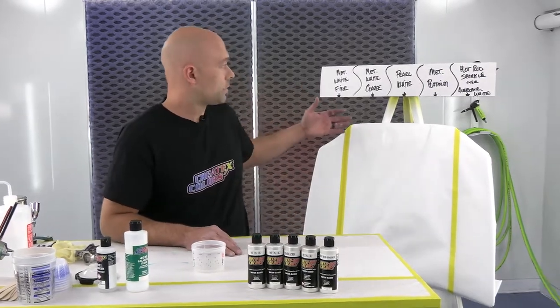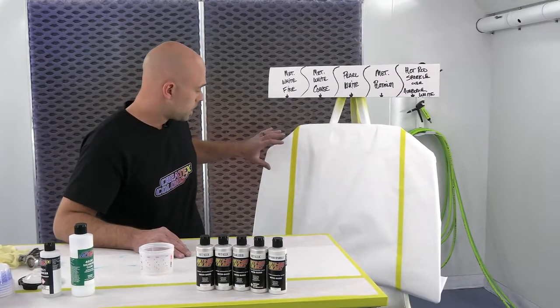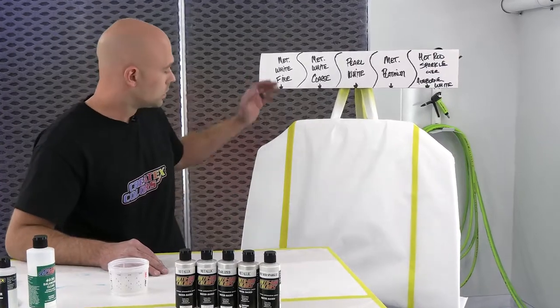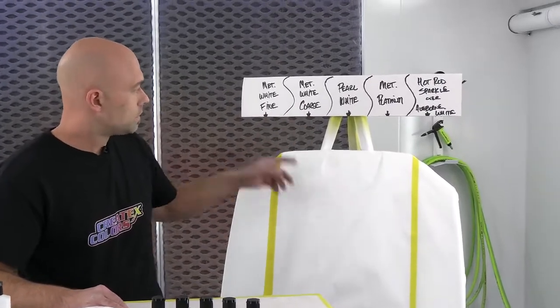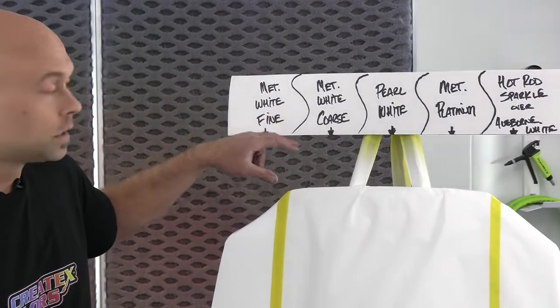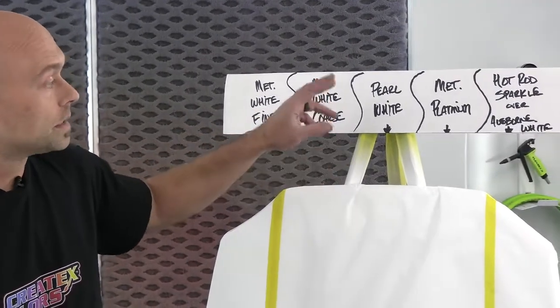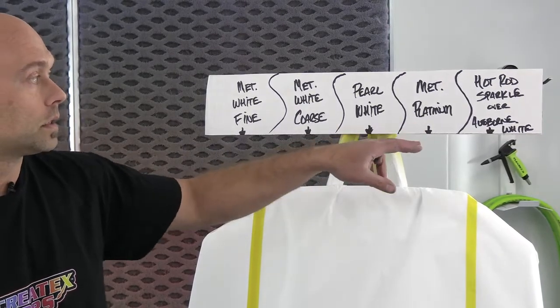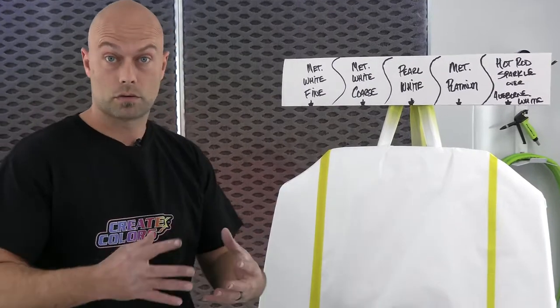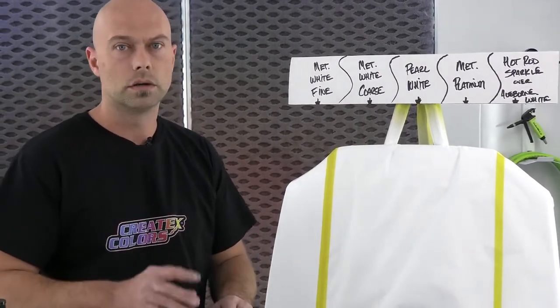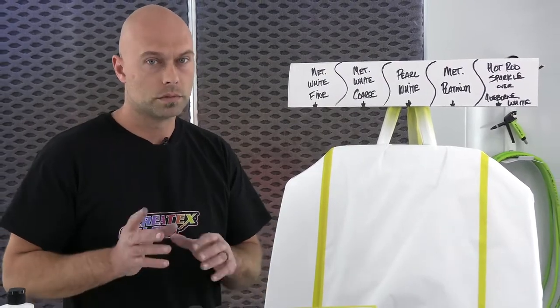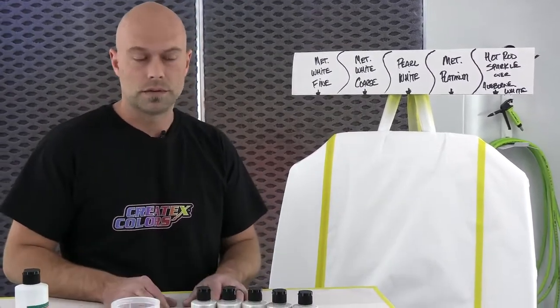So we're going to start. You can see I have my hood here already sealed up with our autoborn sealer white. We'll separate them down into five sections: metallic white fine, our metallic white coarse, our pearl white, our metallic platinum, and we'll finish with the hot rod sparkle white over just the autoborn white. That's a really killer pearl flake color with a lot of pop, and it's a very simple effect to achieve too.